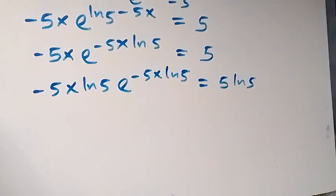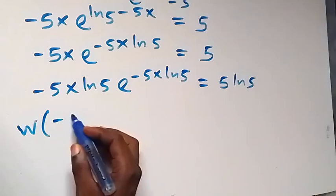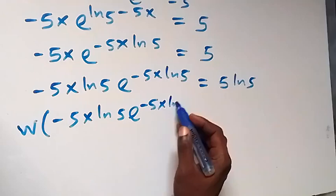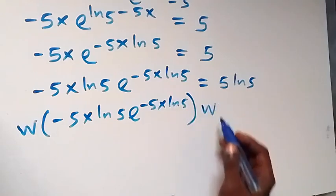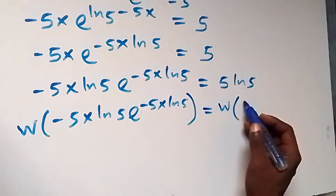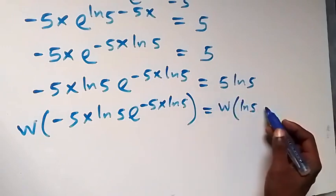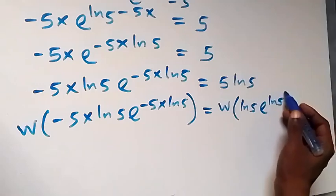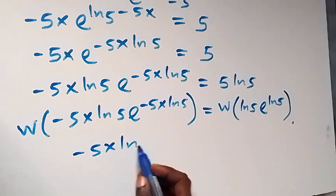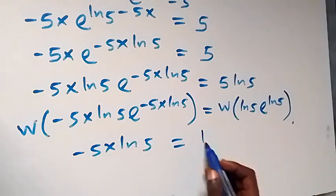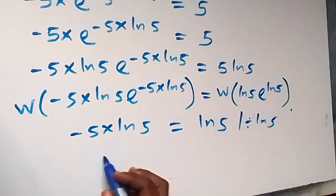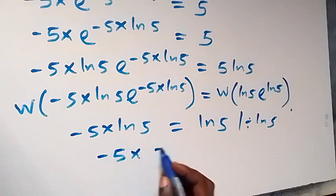Then from what we have here, when we take the W function of both sides, we have W(minus 5x ln 5 · e^(minus 5x ln 5)) equals W(ln 5 · e^(ln 5)). This reduces to minus 5x ln 5 equals ln 5. Dividing both sides by ln 5, ln 5 cancels, leaving minus 5x equals 1.